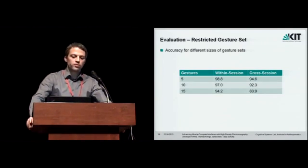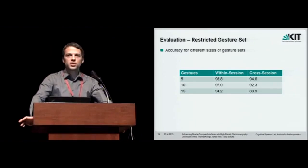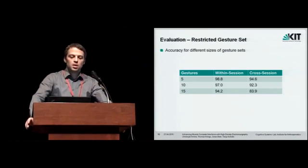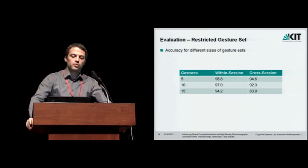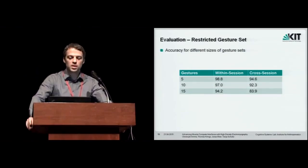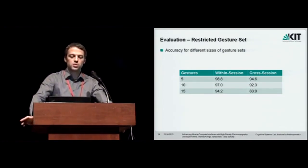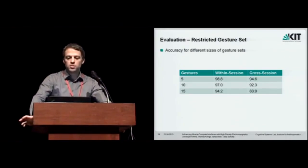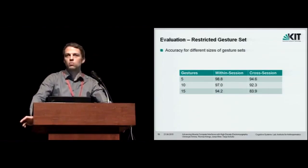So what we finally did is we also looked at what we get from reducing the set of used gestures. Maybe for example, if you really want to design an interface, you probably don't use 27 or 26 different gestures. You might use five or 10. And we selected some based on common sense. We used some that we thought might be well working for an interface and also which are easy to discriminate or well discriminable.